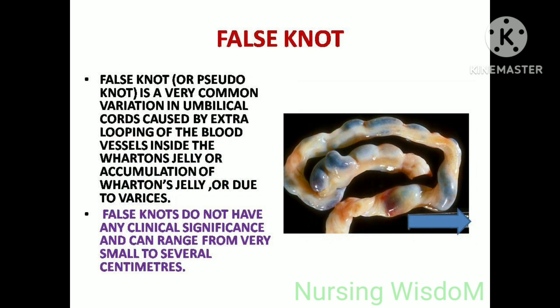False knot, otherwise called pseudo knot: it is a very common variation in umbilical cords caused by extra looping of the blood vessels inside the Wharton's jelly, or accumulation of Wharton's jelly, or due to varices. False knots do not have any clinical significance and can range from very small to several centimeters.